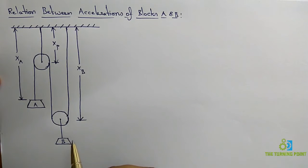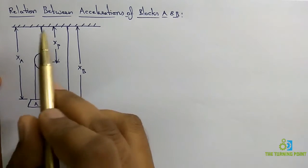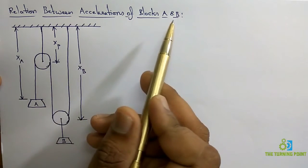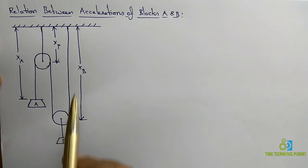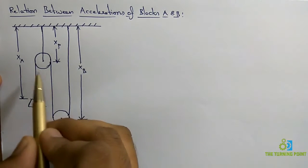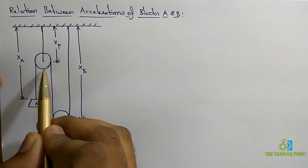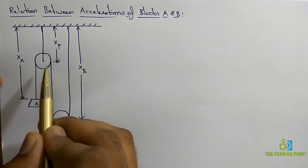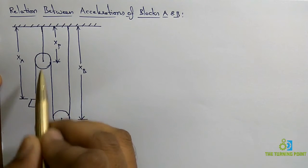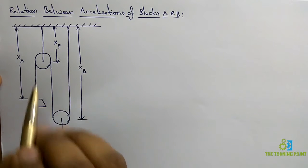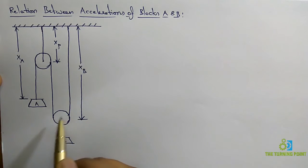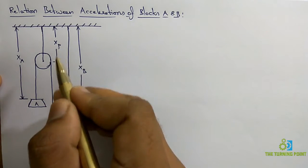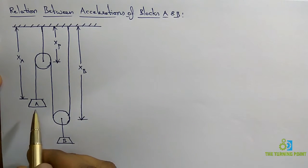Hello everyone, welcome to The Turning Point. In this session, let us see the relation between the acceleration of the two blocks A and B. Here there is a combination of two pulleys — a fixed pulley that is not going to move vertically or horizontally, and a movable pulley that will be able to move vertically upwards or downwards depending upon the load applied.